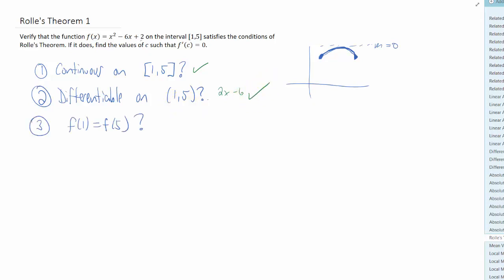The third condition is that the y values of the given function have to be the same on the endpoints of the interval. So the question is, is f of one equal to f of five? Well, let's see. f of one is... I'm getting that f of one is negative three, and f of five... 25 minus 30 plus two is negative three. So the y values on the two endpoints of the interval are the same. So the conditions of Rolle's theorem are satisfied.